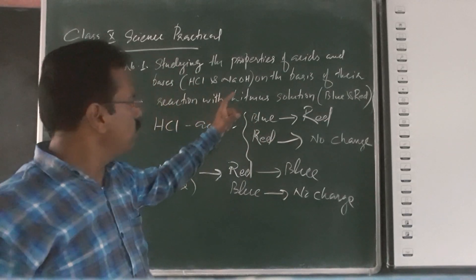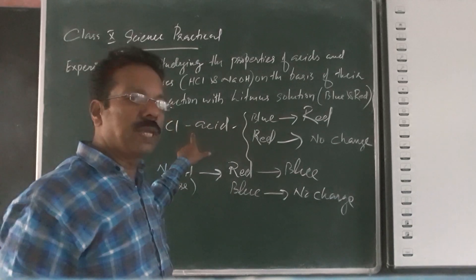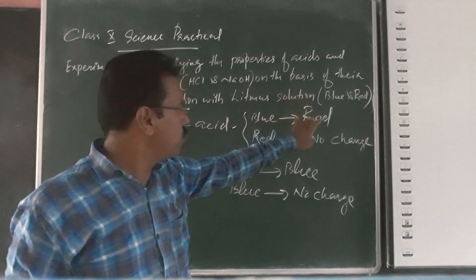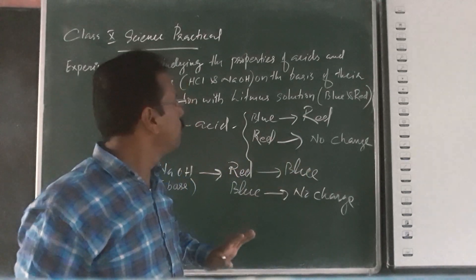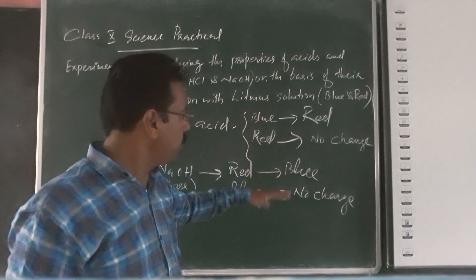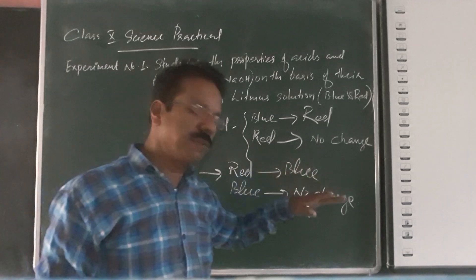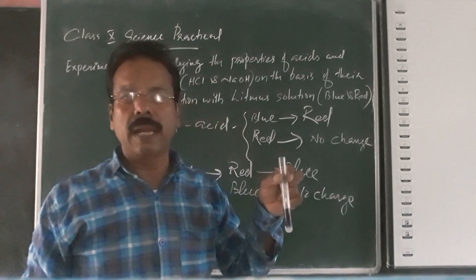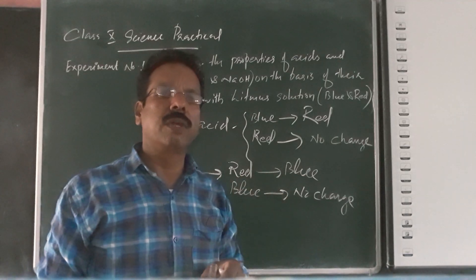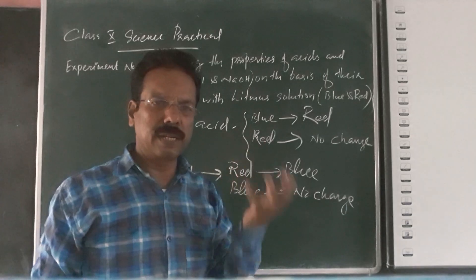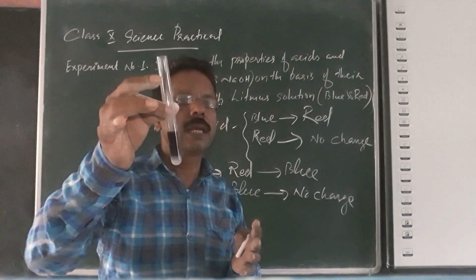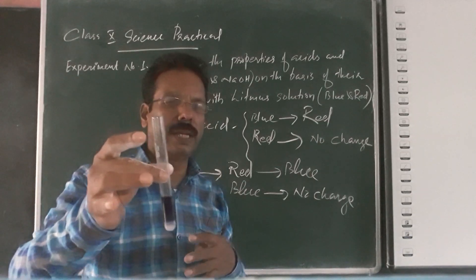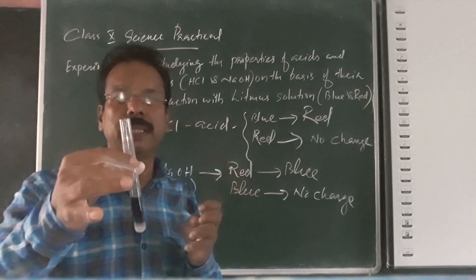Now we can conclude the first part of experiment number one: the reaction of blue and red litmus with hydrochloric acid and sodium hydroxide. In acid, blue litmus changes to red. In base, red litmus changes to blue. On the basis of this, write the proper records in your record book. These practical videos show you the real science lab situation — not a virtual lab — which is highly helpful for your higher studies, higher secondary, and entrance exams. Watch the videos carefully, understand, and grasp everything properly. Thank you.